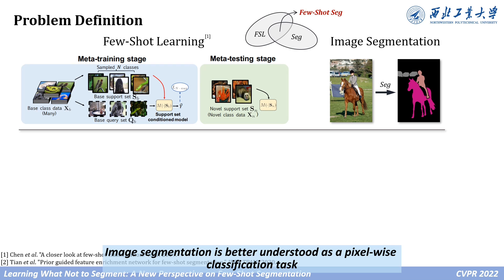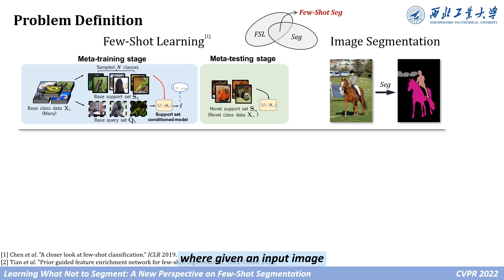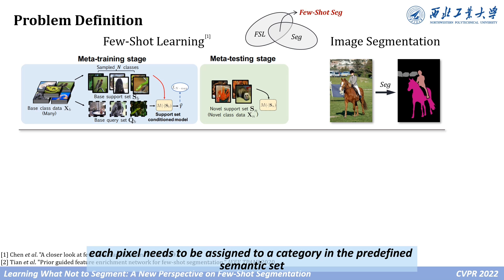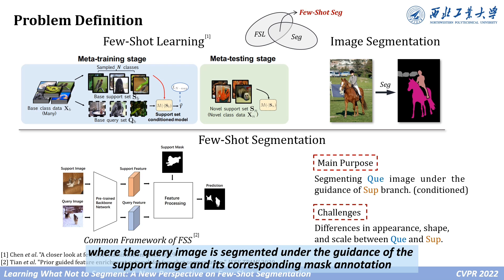Image segmentation is better understood as a pixel-wise classification task, where given an input image, each pixel needs to be assigned to a category in the predefined semantic set. A common framework is shown below, where the query image is segmented under the guidance of the support image and its corresponding mask annotation.